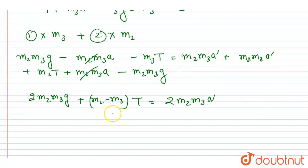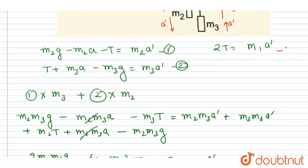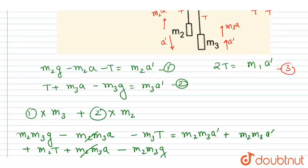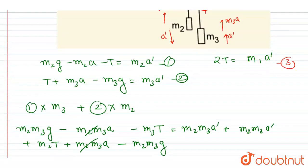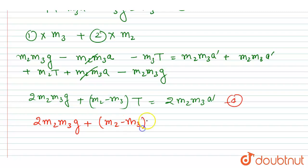Now we have two equations and two unknowns — equation 3 and equation 4 — so we can solve for t and a'. From equation 3, t equals m1*a' divided by 2. Substituting this value of t into the combined equation.